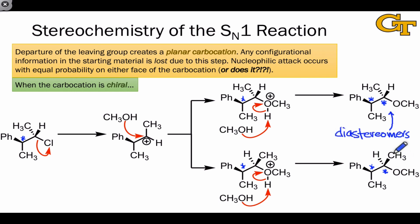And as we've seen in a theoretical context in earlier discussions of stereochemistry, because these molecules have different energies, we should expect unequal yields of these two diastereomers. And this is where this 'or does it' situation comes in.